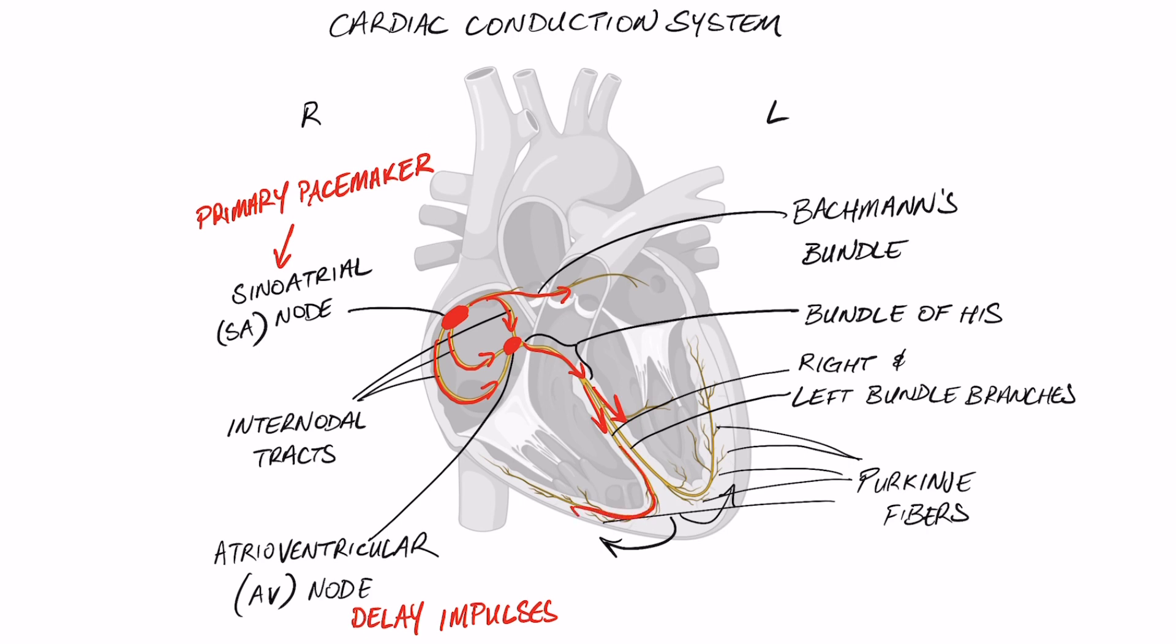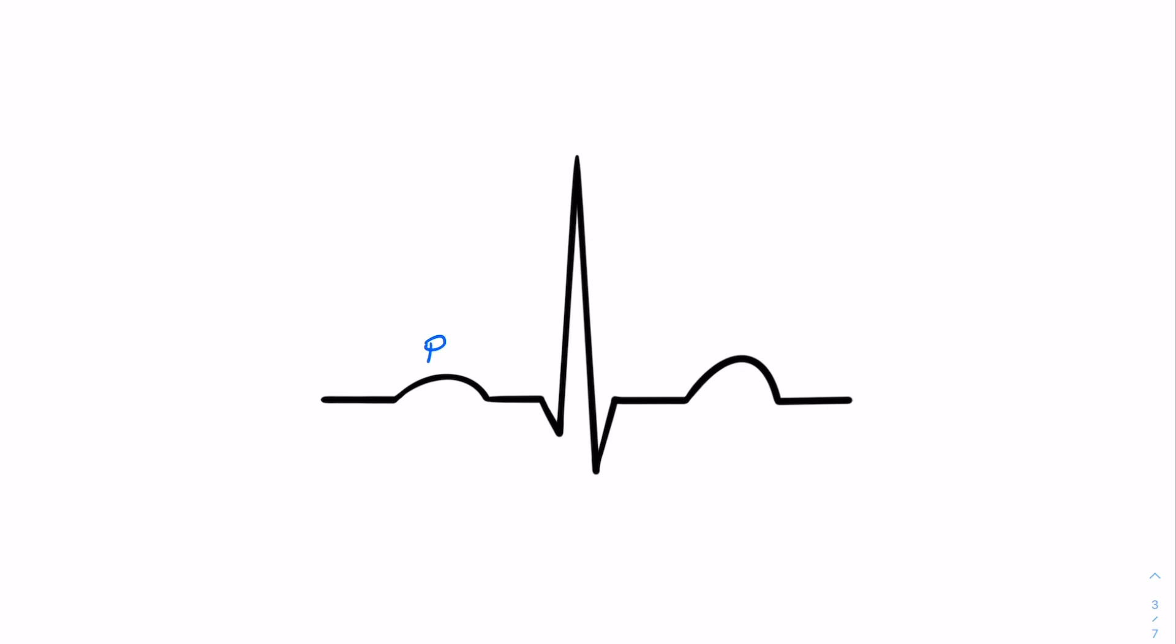It can't happen at the same time. So these electrical impulses in the form of action potentials following this pathway can be detected and displayed as an ECG trace. Get it trace? Sorry.